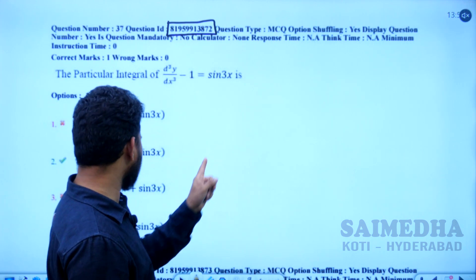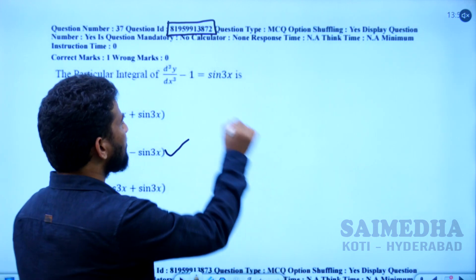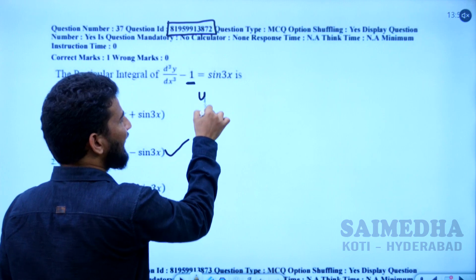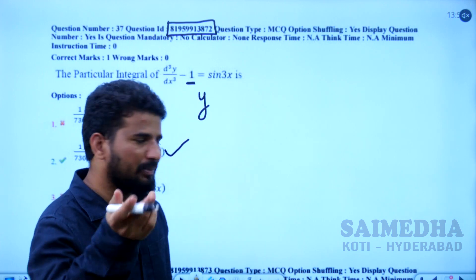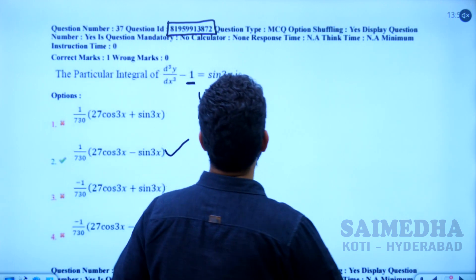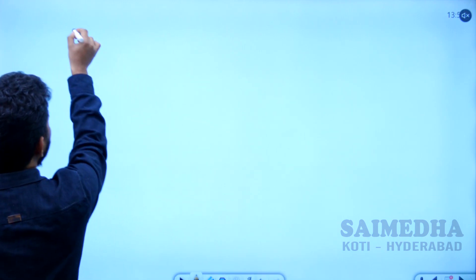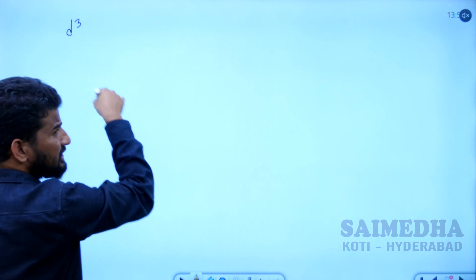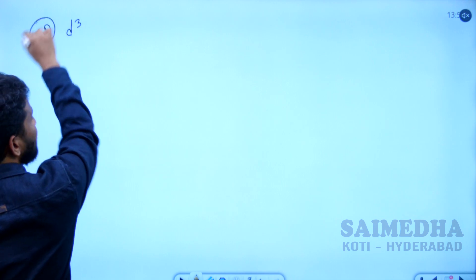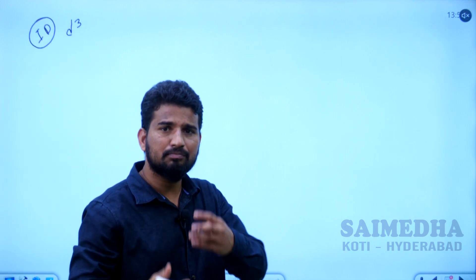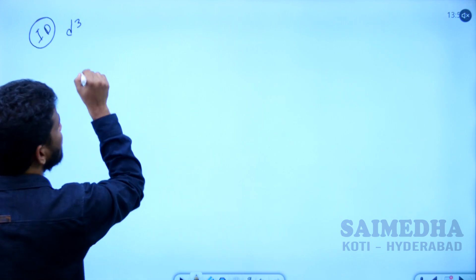Looking at the options, in the place of 1 there should be a Y. Let me explain this question — if there is a Y, there is a different solution. Please mention the question number ID — this is mandatory. The question number ID is mandatory because the question order is jumbled for each and every candidate. That is why the question number ID is very, very important. Please note that.